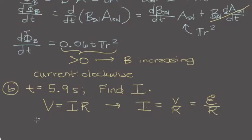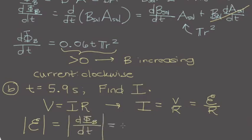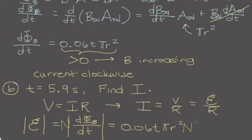The magnitude of the induced current is just the magnitude of n times d(phi_b)/dt divided by R, from Faraday's Law — we've essentially already solved for d(phi_b)/dt: it's 0.06t · pi·r². Because we're dealing with n turns of wire, we must include n in both parts of the problem. Plugging in all the values given at the start — n = 6, t = 5.9s, r = 0.025m, R = 0.1 ohms — the induced current is approximately 4.17 × 10⁻² amps. That is the end of the problem.